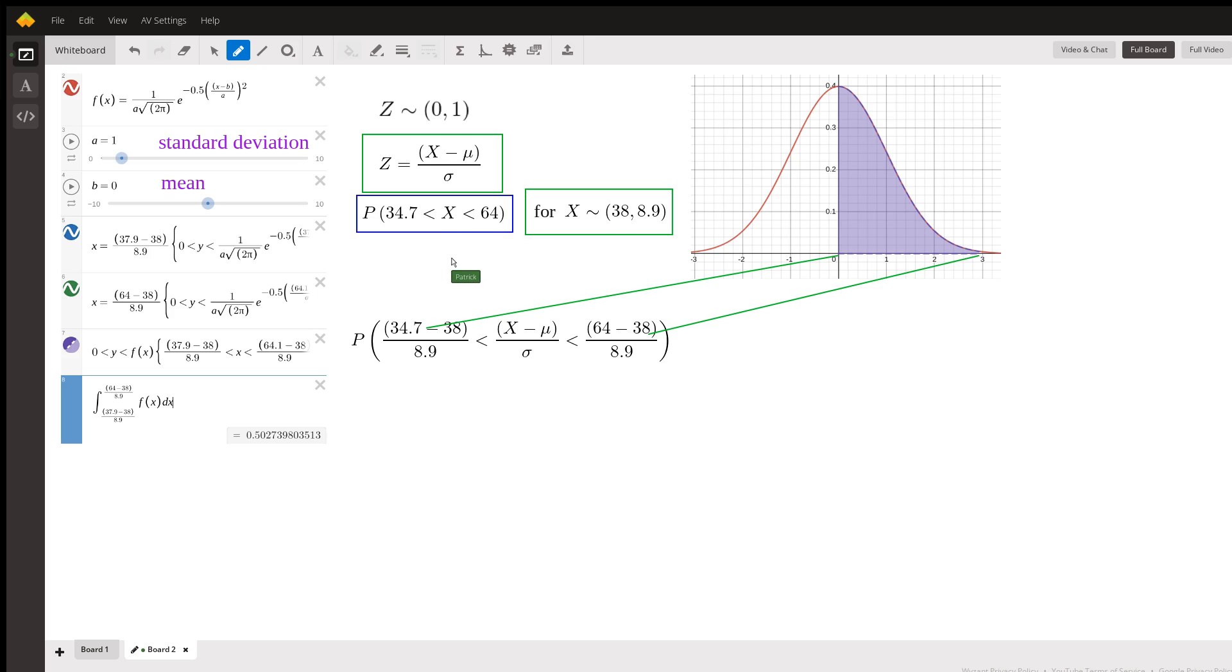All right, so if we need to do the standard normal distribution conversion, then it's just calculating this here: we subtract the mean, divide by the standard deviation, and then you'll get these numbers.